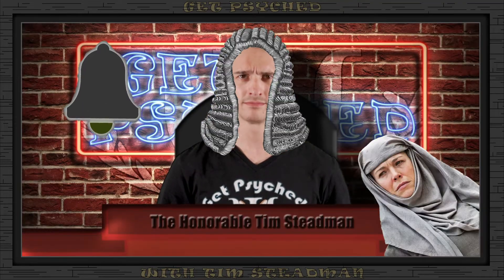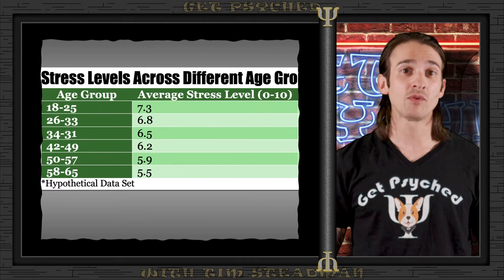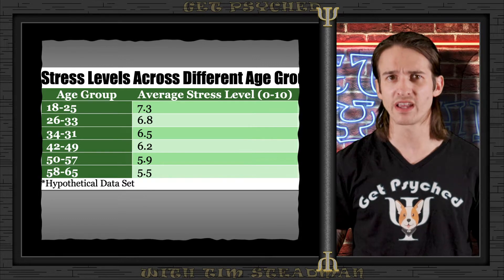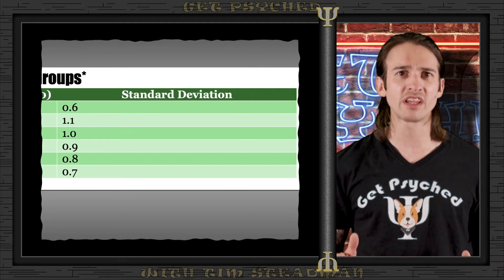Now that we have all the important terms for variability and central tendency, let's take a look at some hypothetical psychological data to see if we can identify some of the concepts we just talked about. Here on the screen is our hypothetical data set exploring stress levels across different age groups. We have a table with average stress levels on a scale from 0 to 10, where 10 represents maximum stress across various age groups, along with the standard deviation for each group.